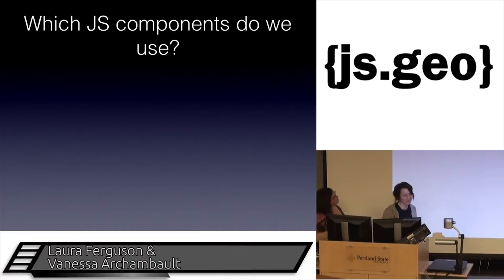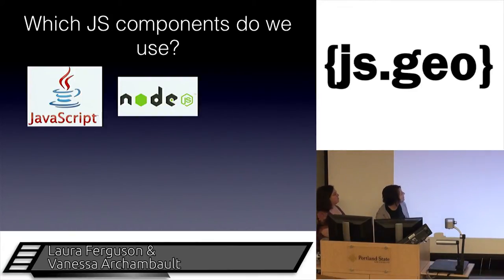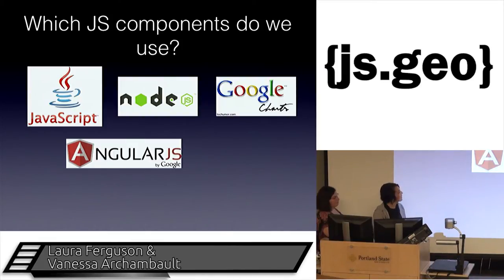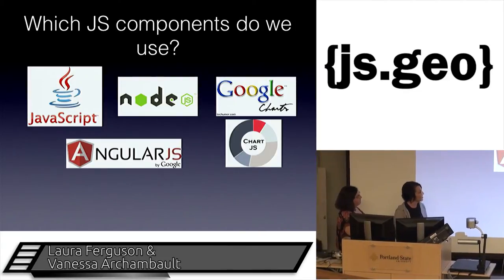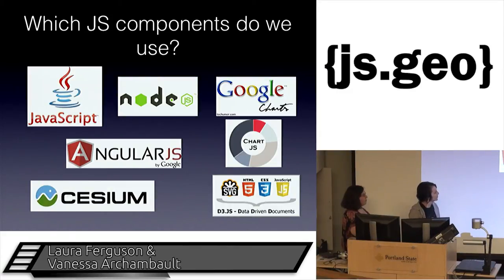We use a lot of JavaScript in our app, which is why we came here. On the back end we use Postgres as our database and Java. For the most part all of our front end is JavaScript. We use Node lightly, mostly as a package manager to get all our components together. We use Angular to bind our data and get it talking from the Cesium-initialized map all the way to our views and charts. We use three different charting systems: Google Charts, Chart.js, and we're getting more into D3 for really great graphics. Recently we transitioned from Google Earth to Cesium, which we love, but we've run into a few issues.